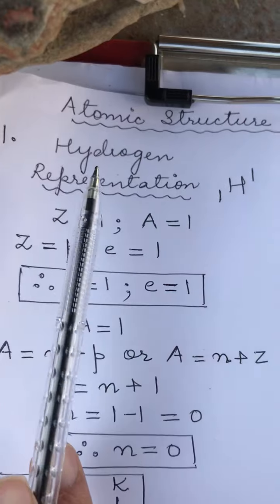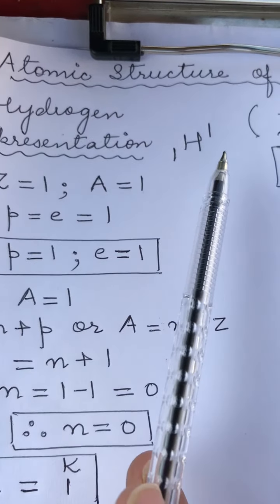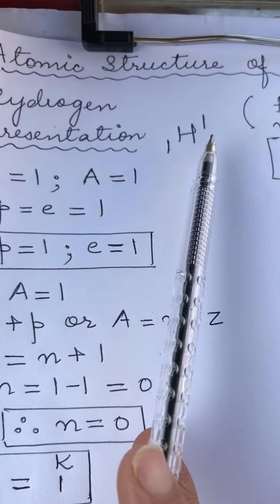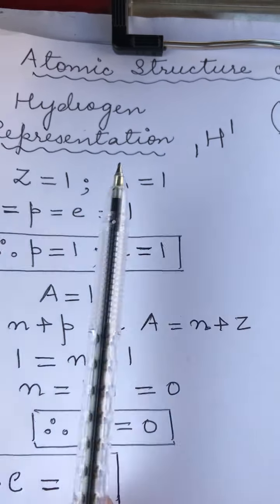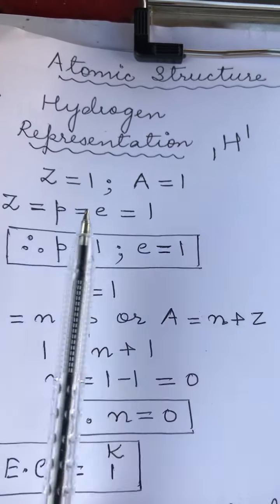So the first step that you need to follow is you need to write the name of the element, that is hydrogen. It is represented by the formula H¹₁, where 1 stands for the atomic number and the 1 in the superscript stands for the mass number. So Z is 1 and A is 1 for the first element.